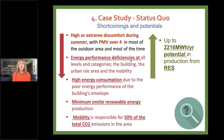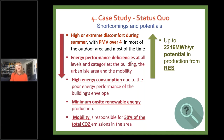This is the summary of the shortcomings and potentials of the site: high to extreme discomfort during summer with PMV over four points in most outdoor areas and most of the time; energy performance deficiencies at all levels; high energy consumption across the urban isle, buildings, and mobility due to poor building envelope performance and minimal renewable energy utilization; and mobility responsible for more than 50 percent of total CO2 emissions. However, there is good news: high potential for renewable energy production amounting to approximately 2,260 megawatt-hours.